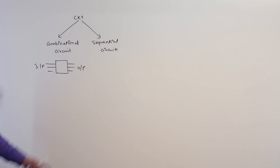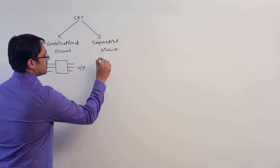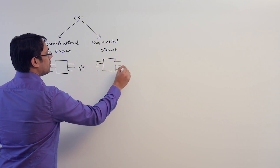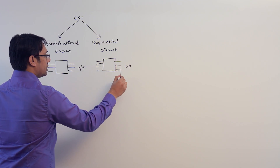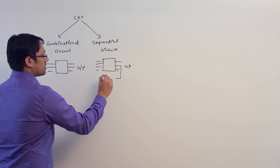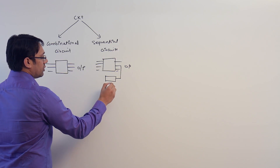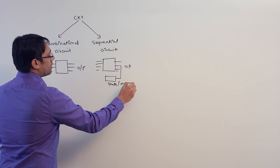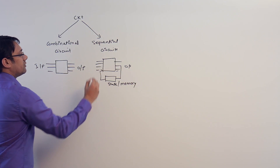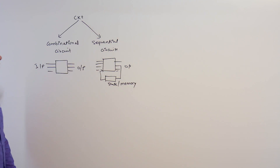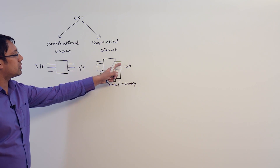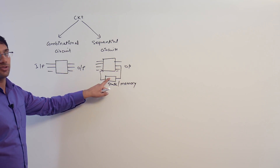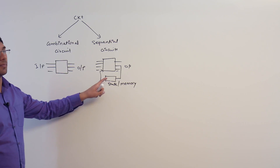In the case of a sequential circuit, the current output is mostly dependent on the previous input, which we remember in the form of state. We are going to have some kind of memory element, and we give this memory element as input. So the current output is dependent on the current input as well as the previous output, or the previous state.